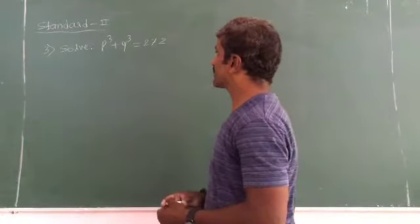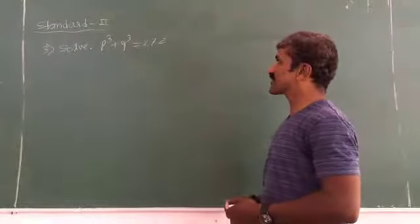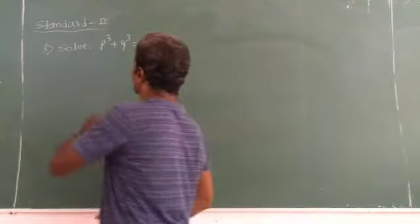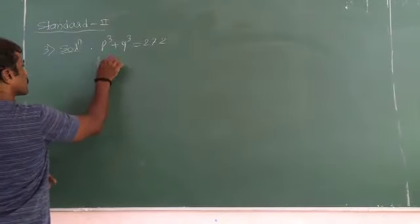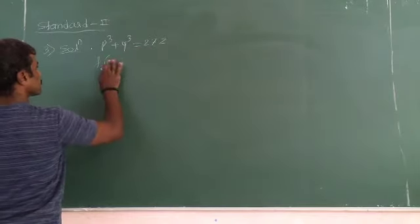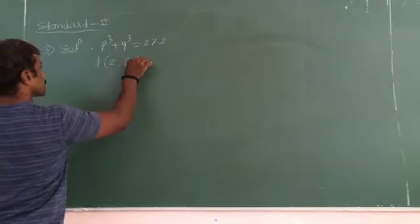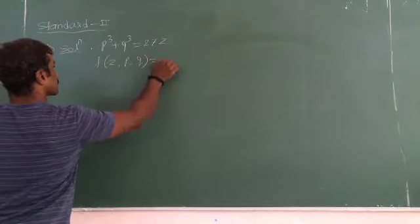Next, third example: solve p³ + a³ = 27z. As it is exactly the form of Standard 2, because of the form of z, it is p, it is u, so that is equal to zero.